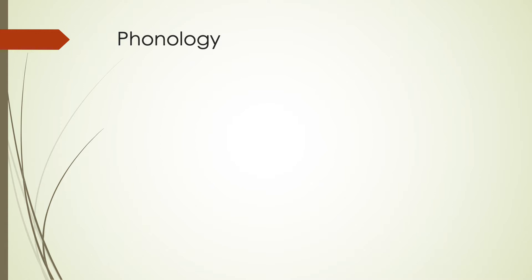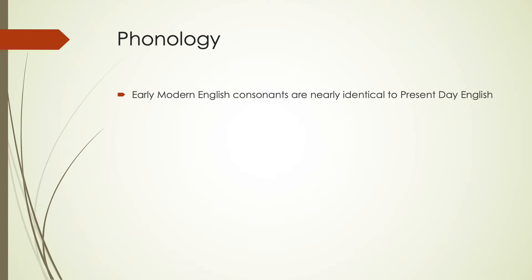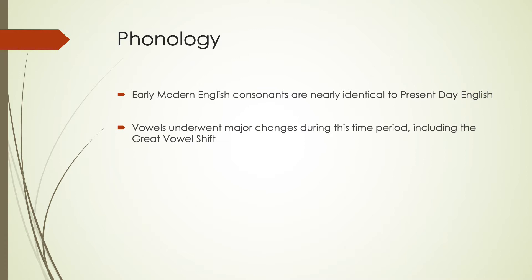With phonology, we'll notice that there are changes in both the consonants and the vowels. The consonants are nearly identical to present-day English by this time period. Even though there are some changes to certain environments where some consonants are or are not pronounced any longer, by the end of Early Modern English, the IPA chart for English looks almost identical to the present-day IPA chart.